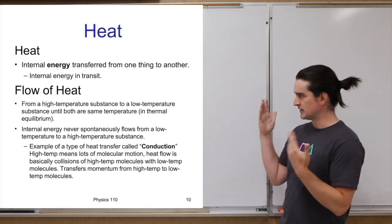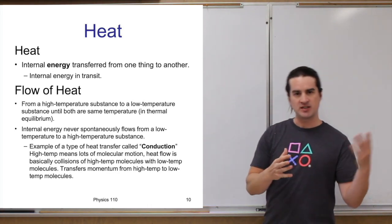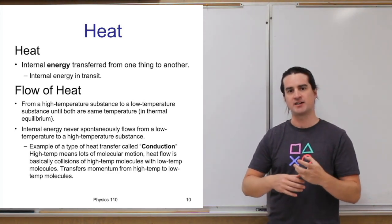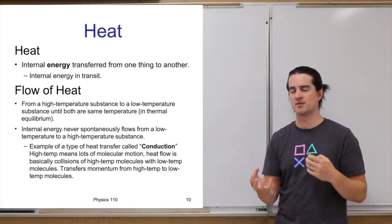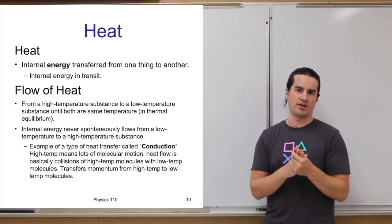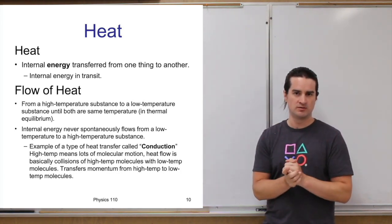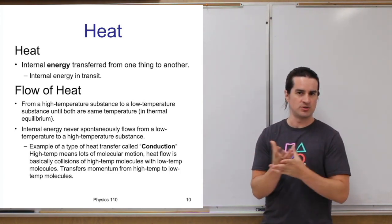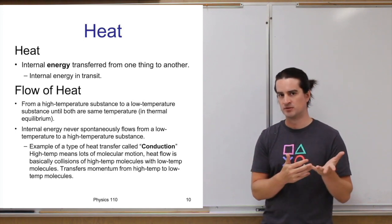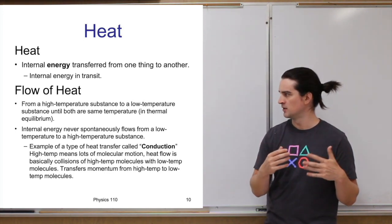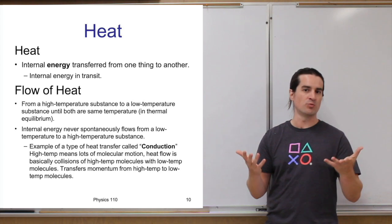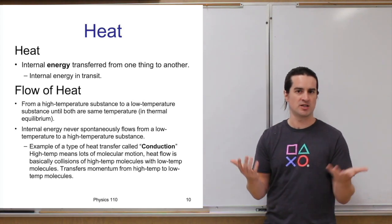How does heat flow? In general, heat will always flow from a higher temperature object to a lower temperature object — at least spontaneously or naturally. Heat always flows from that higher to that lower temperature, and it will continue flowing until both objects come to the same temperature. Then there's no difference in temperature and no heat flow — those objects are in thermal equilibrium.